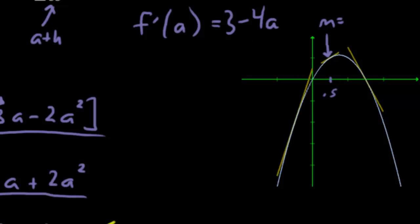So if we do that, just to give you an example, f prime of 0.5 is 3 minus 4 times 0.5. That's 3 minus 2, which is 1. So that means the slope at this point right here is 1.